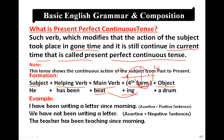For example: 'He has been beating a drum.' Another example: 'I have been writing a letter since morning.' 'We have not been writing a letter.' 'The teacher has been teaching since morning.' This is the definition and the main concept of Present Perfect Continuous Tense.